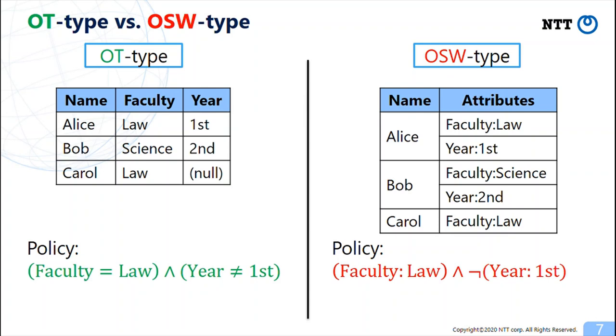Semantically, the former policy is satisfied if one has attributes for faculty and year and the value for faculty equals law and the value for year does not equal first.